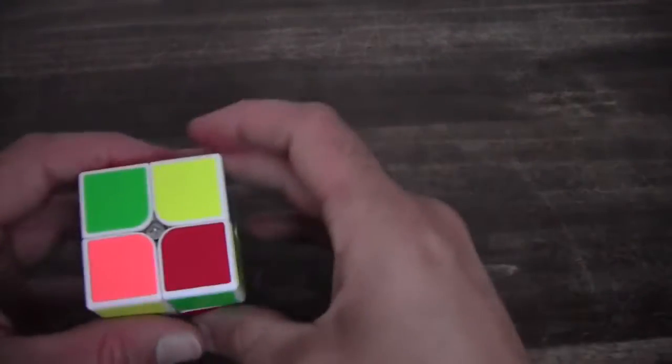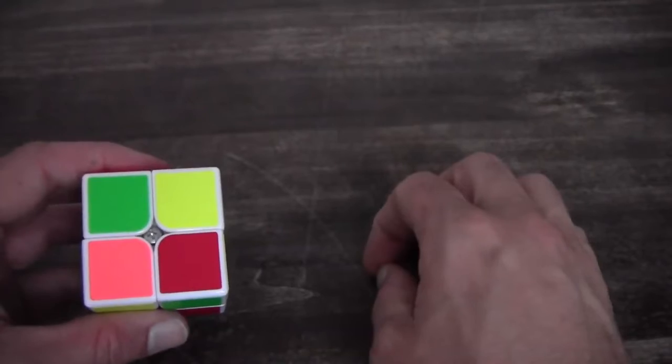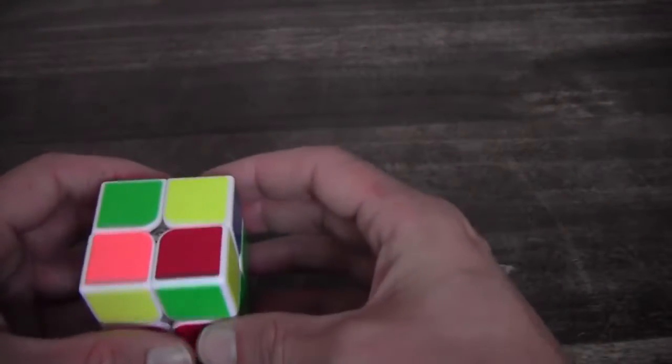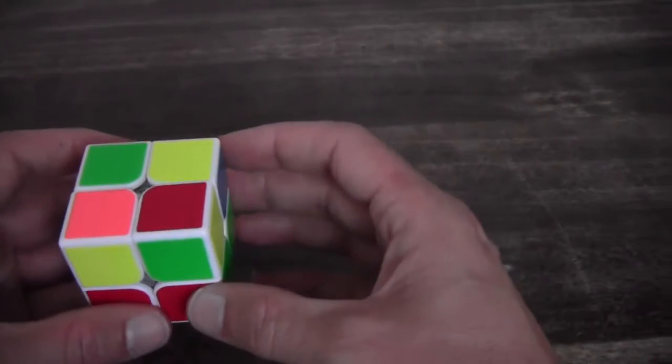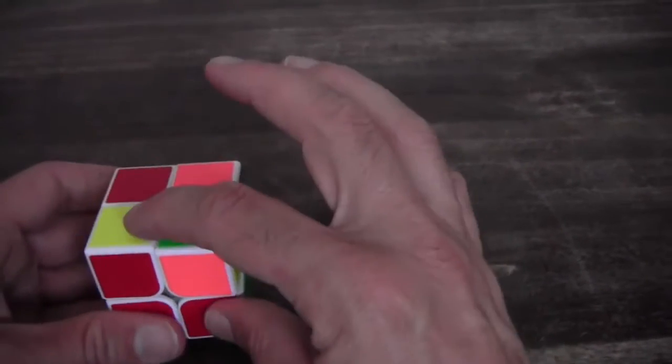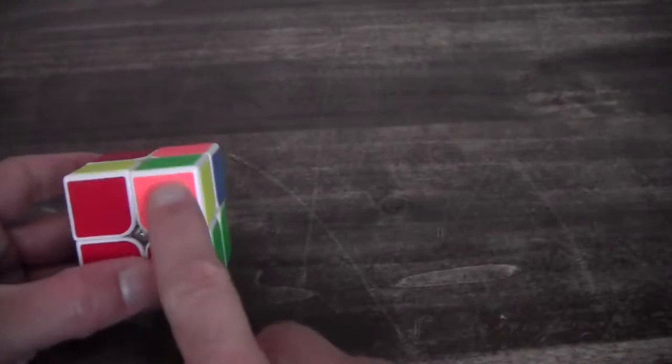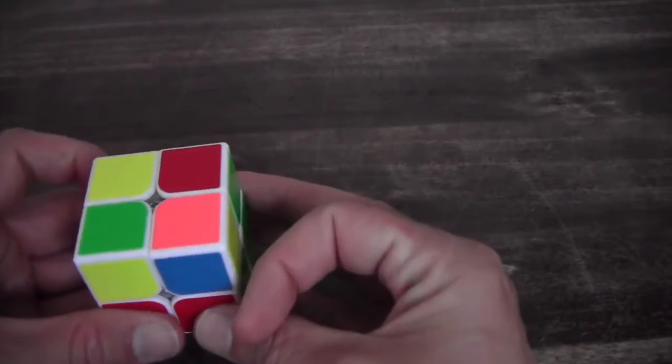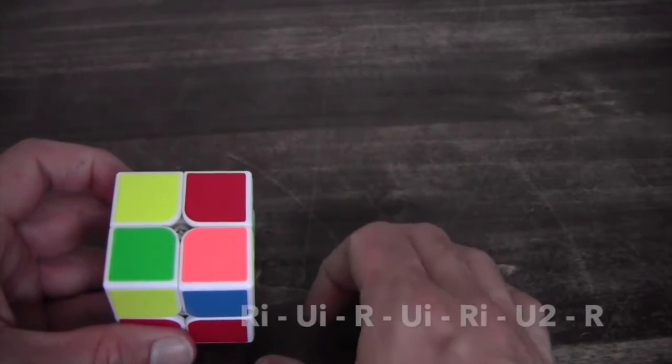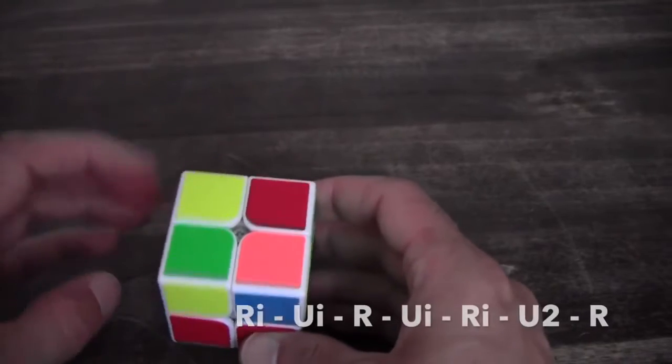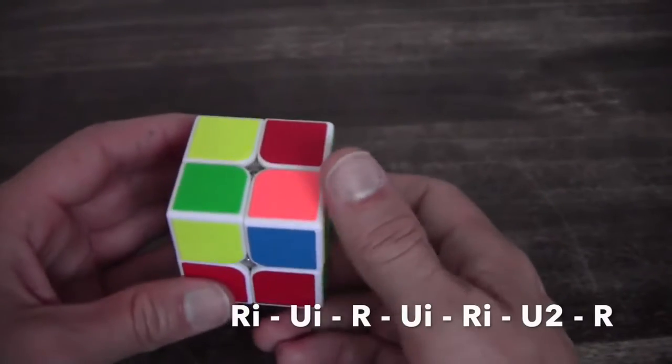The last situation is that you also have one solved corner piece. But it won't work if you position it like this because there is no yellow over here. Then you should keep it on the left top and perform the following algorithm.